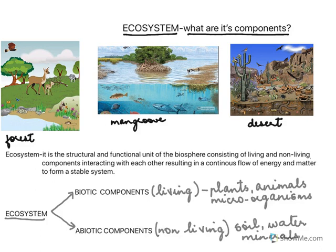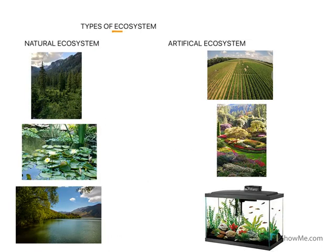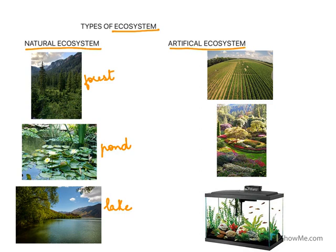Ecosystems are of two types. We have natural ecosystems like a forest, a pond, or a lake. On the other hand, we have artificial ecosystems like crop fields — paddy fields, wheat fields, or corn fields that humans grow. Gardens in cities are also artificial ecosystems, and an aquarium is another example of an artificial or man-made ecosystem.